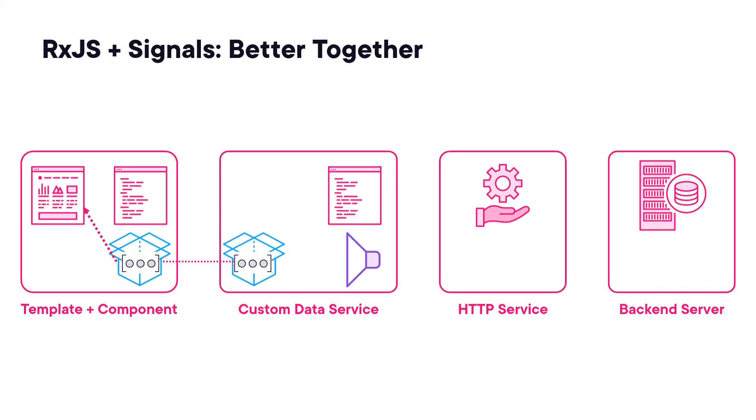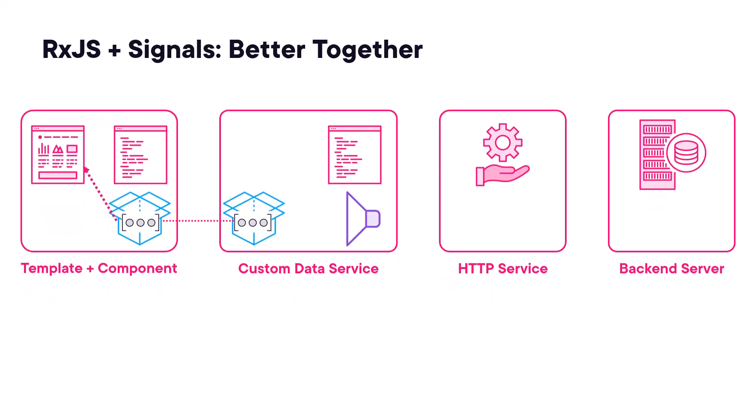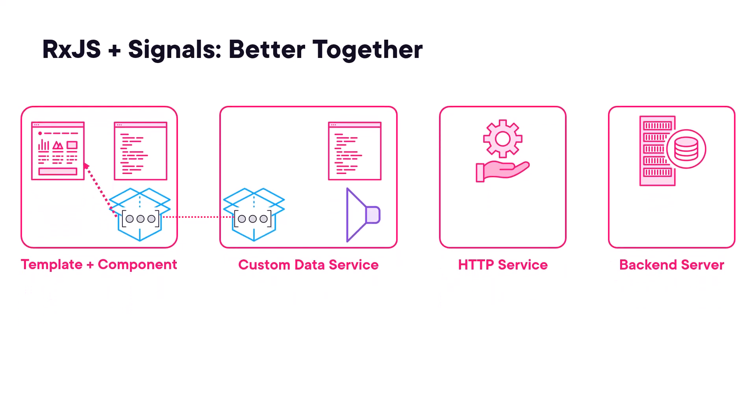You may find a common dividing line, about here, in the middle of our custom data service. We often use signals to the left of this line and RxJS to the right. This isn't a hard and fast rule, but it's becoming a common practice.